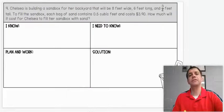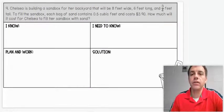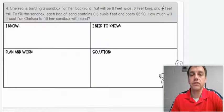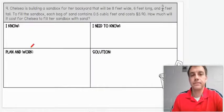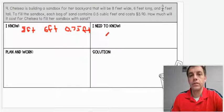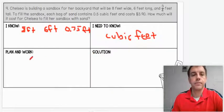Last one. Chelsea's building a sandbox for her backyard that will be 8 feet wide, 6 feet long, and 3 and a quarter feet tall. To fill the sandbox, each bag of sand contains 0.5 cubic feet and costs $3.90. How much will it cost for Chelsea to fill her sandbox with sand? What do we know? We know that the width is 8 feet. We know that the length is 6 feet. And we know that the height is, I'm going to change this to a decimal, 0.75 feet. And what we need to know is how many cubic feet we need.